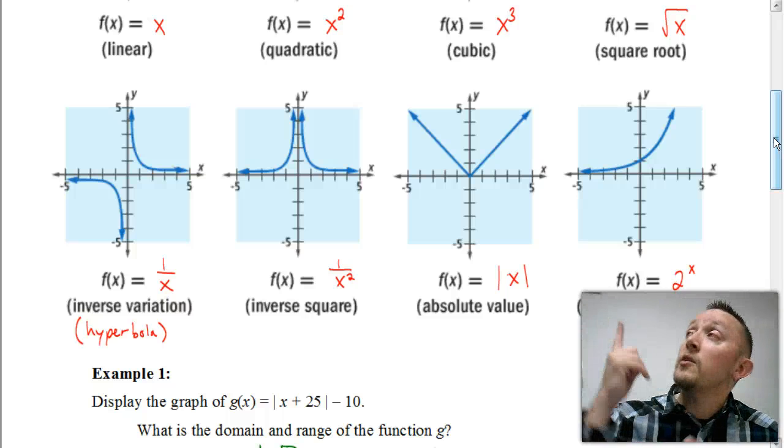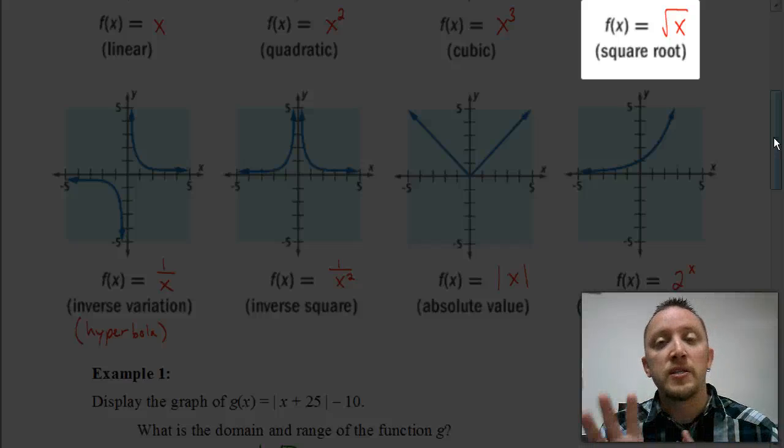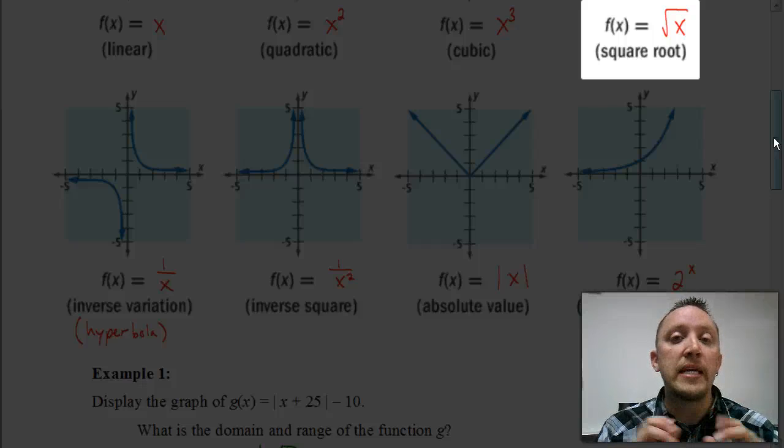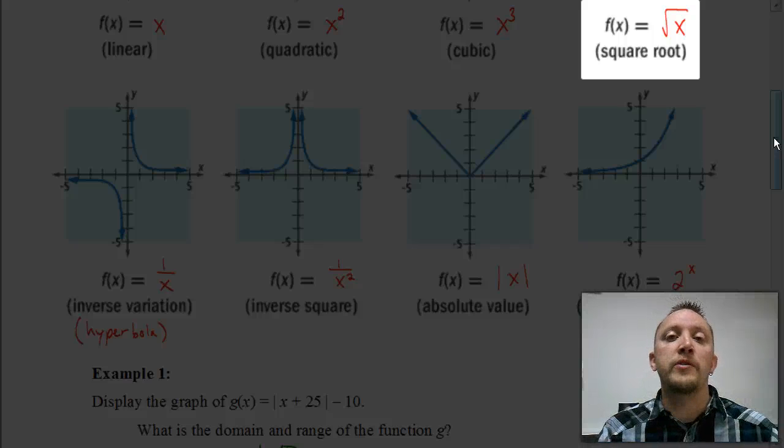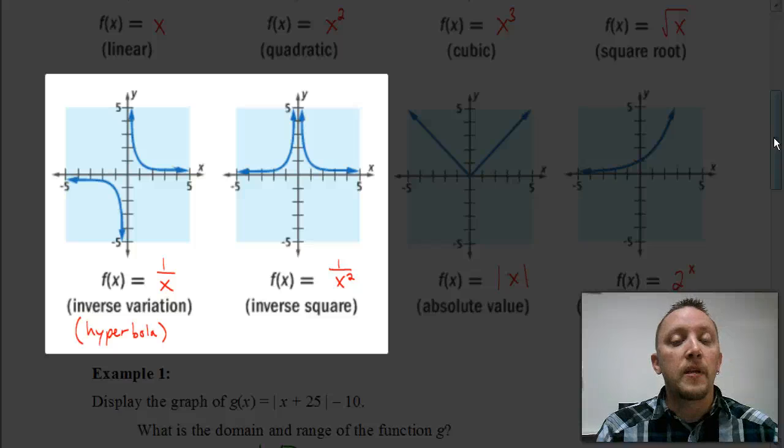The only exception is when we're dealing with the square root function. There's only a certain type of numbers we can take the square root of, or the opposite of that is you can think of, well, what kind of numbers can't we take the square root of? So take a second to think about that, and hopefully you're thinking of negative numbers. You cannot take the square root of a negative number. So the domain for that would be all numbers greater than or equal to zero, because we could take the square root of zero, it would just be zero.